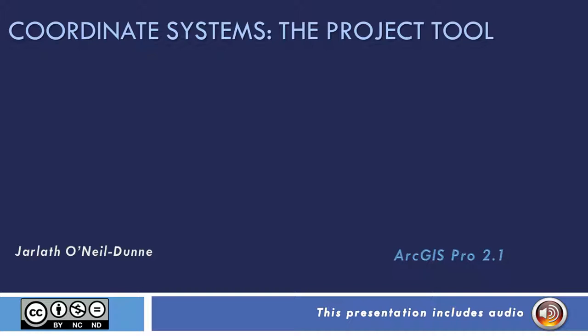This video will show you how to transform your vector data sets from one coordinate system to another in ArcGIS using the project tool. It's important to note that prior to using the project tool you should have a data set that has a known defined coordinate system. If your coordinate system is unknown or not defined correctly, you shouldn't be using the project tool.